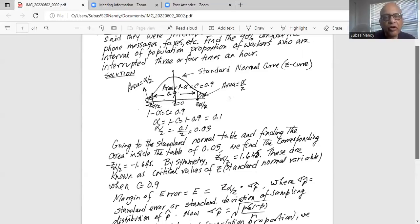We look for area inside that table as 0.05, and then we read off the corresponding Z values. And for area 0.05, the minus Z alpha by 2 value is minus 1.645.